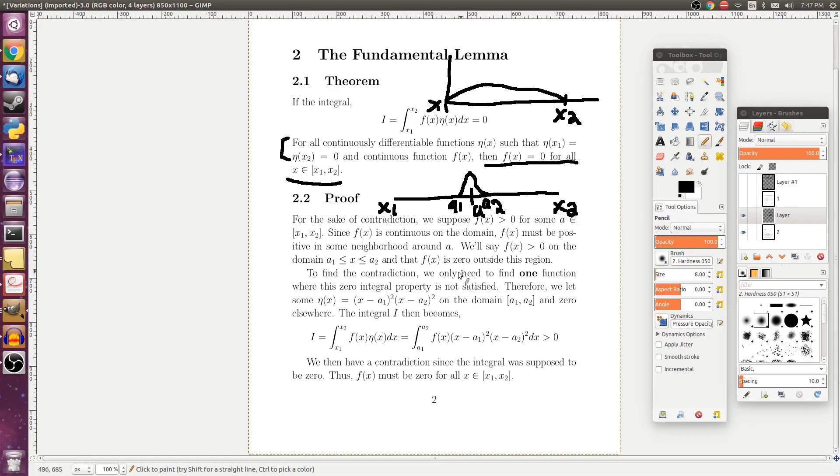So to find the contradiction that we're looking for, we need to find one function eta where that zero integral property is not satisfied. So if we let eta of x equal to this function right here. So first off, it disappears at these end points right here. So this eta is going to be zero here and zero here.